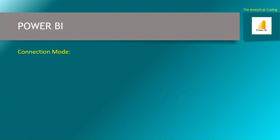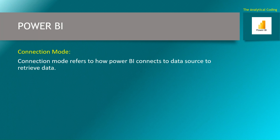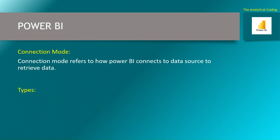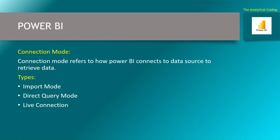Connection mode refers to how Power BI connects to a data source to retrieve the data. It determines whether Power BI imports data into its in-memory model or queries the data live from the source. We have different types of connection modes: import mode, direct query mode, and live connection.